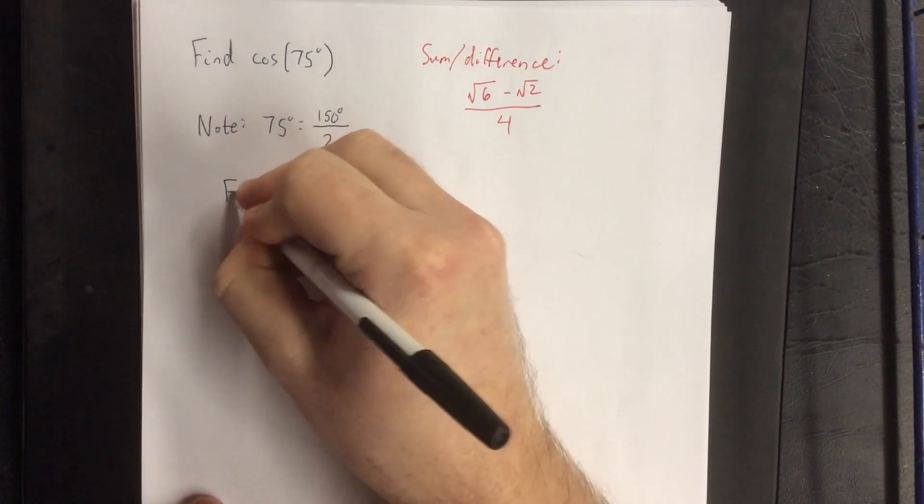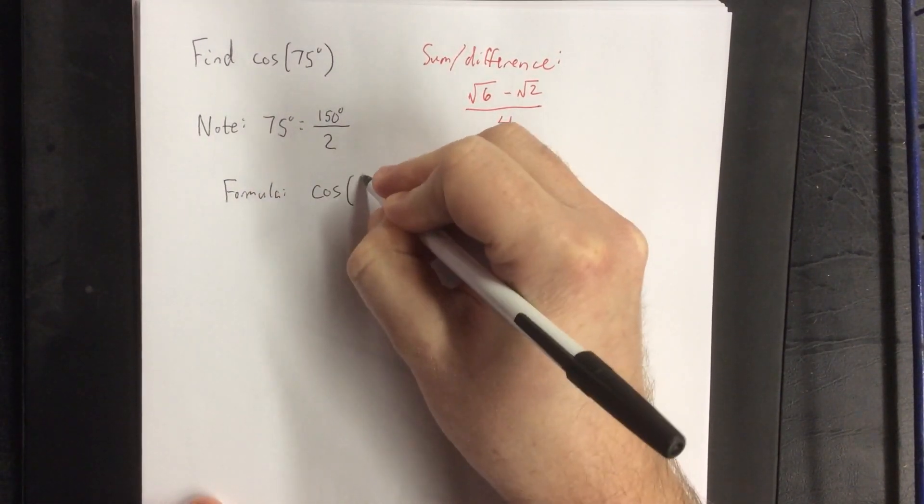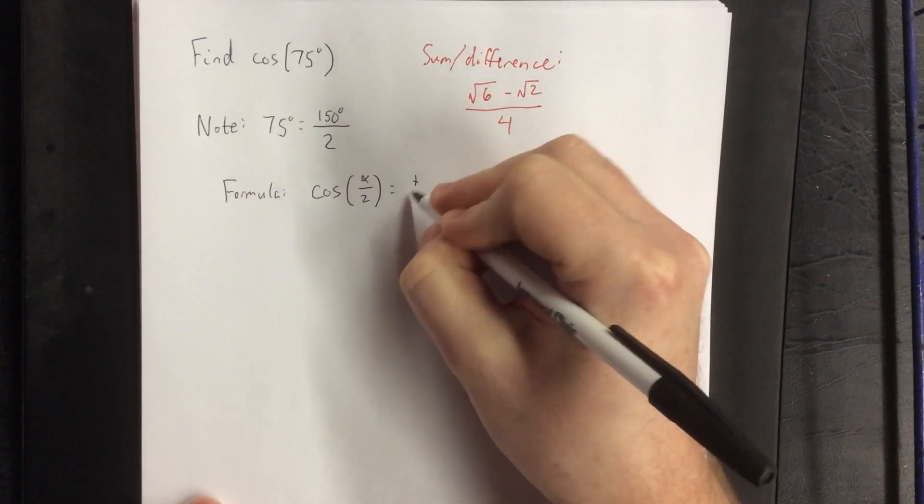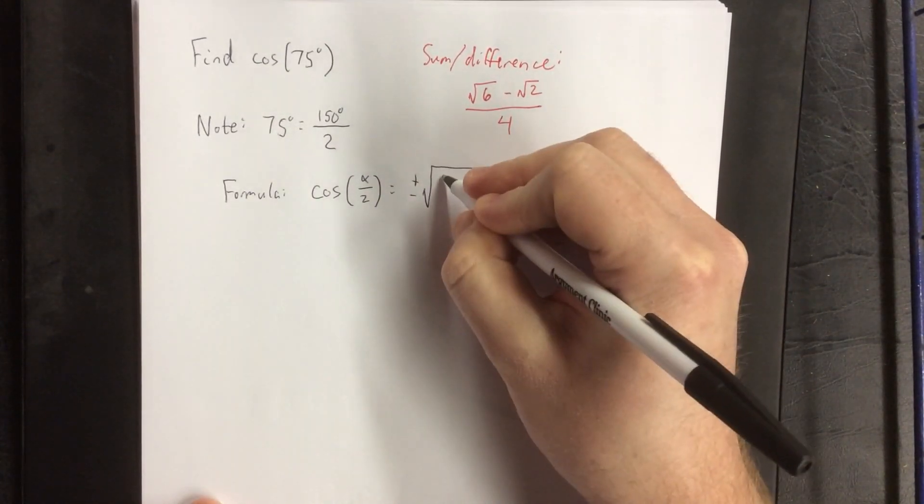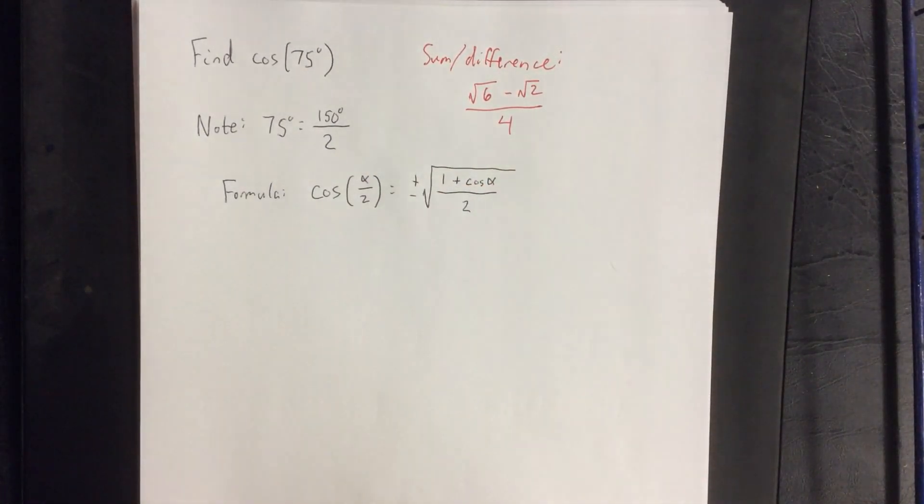Now the formula that we have for the cosine of a half angle is the following. The cosine of alpha over 2, that would be our 75 degree angle, is equal to plus or minus the square root of 1 plus the cosine of the double the angle all over 2.